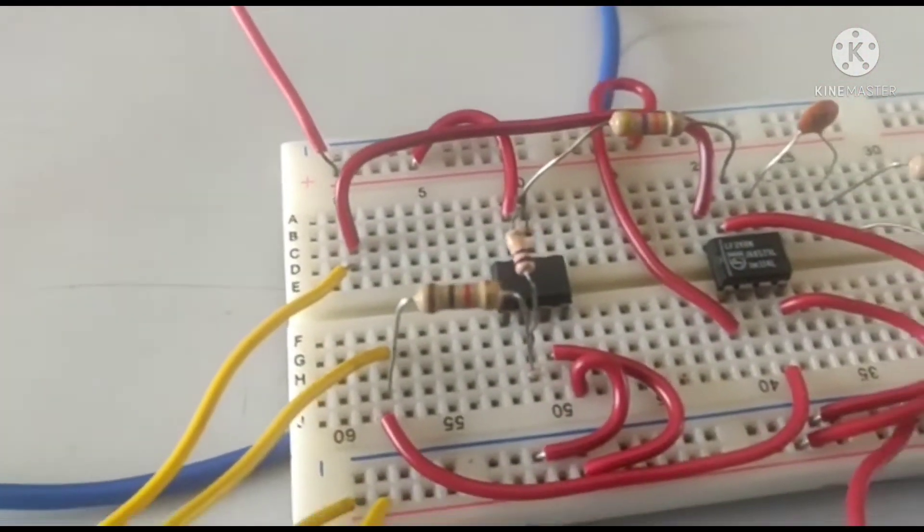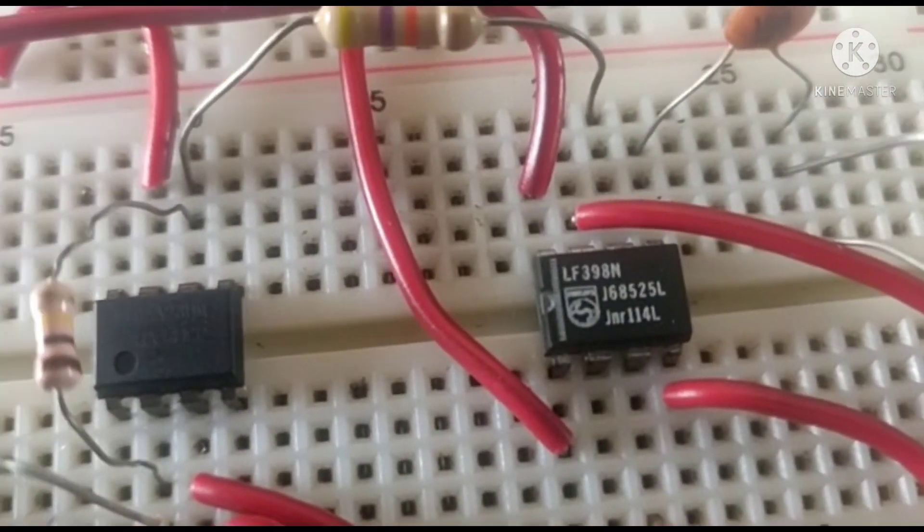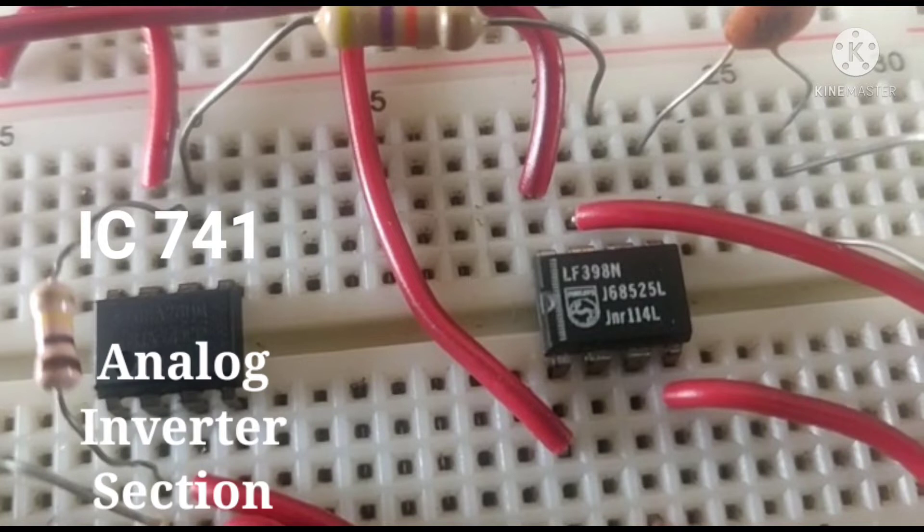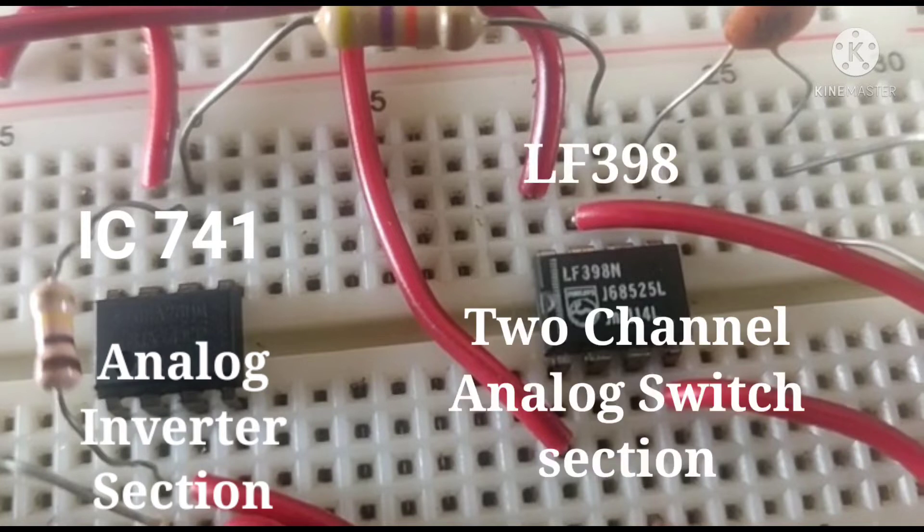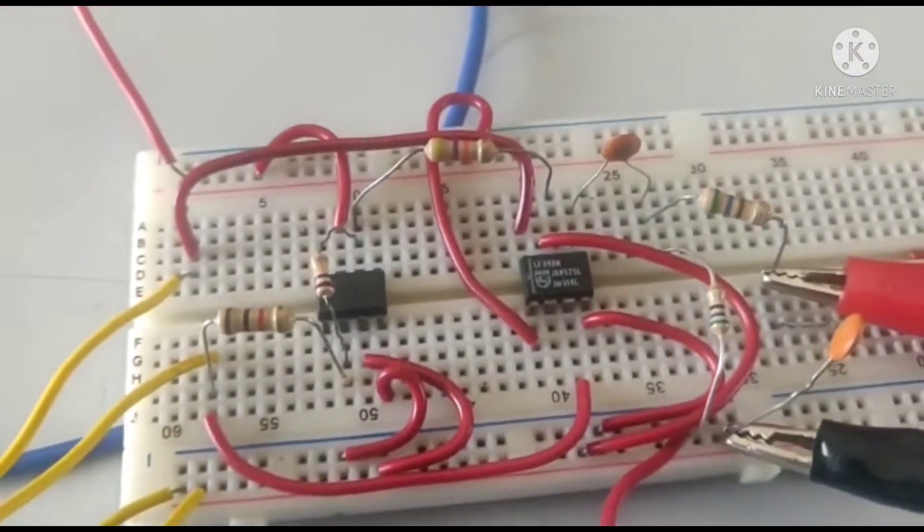Now let us see on the breadboard how I implemented this. See on the left side, IC 741. It is an analog inverter section. And right side, LF 398 acts like a two channel analog switch section. And next to it,